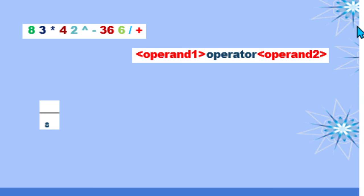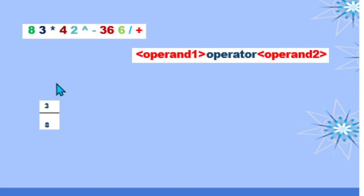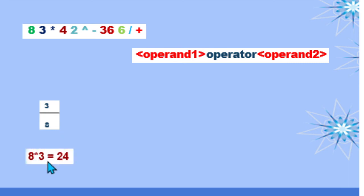We have 8 — since it is an operand, we push it on our stack. Next we have 3 — it is also an operand, so we push it on our stack. Then we have our multiplication operator. Since it is an operator, we pop out the last two operands from our stack and perform multiplication. Here, 8 is operand 1 and 3 is operand 2, so 8 multiplied by 3 is equivalent to 24. We then push the obtained value 24 on our stack.